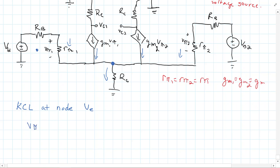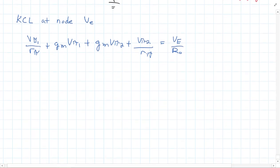And then we have this current coming down there as well, and we have another current coming down into that node. Remember, current entering a node is equal to the current leaving the node. So from this one right here, we would get VPi1 divided by RPi. So VPi1 divided by RPi, because that's going to get me the current through that resistor, which is the current then entering that node, plus Gm VPi1, plus Gm VPi2, plus VPi2 over RPi. So that's the current entering the node, and that's going to be equal to VE over R0. That's my KCL equation.